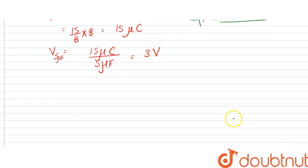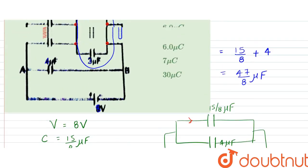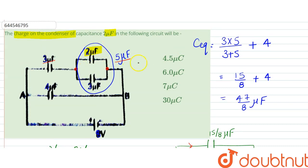So across 2 microfarad, it would be 3 volt as well since they are in parallel situations, so the potential would be same. The charge we have to find, since the capacitance is 2 microfarad, since q is equal to CV, right, so 3 into 2 is equal to 6 microcoulomb. So the amount of charge on 2 microfarad capacitor would